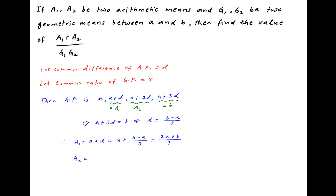The second arithmetic mean a2 between a and b is equal to a plus 2d, which equals a plus 2 times (b minus a) upon 3, which in turn simplifies to a plus 2b upon 3.